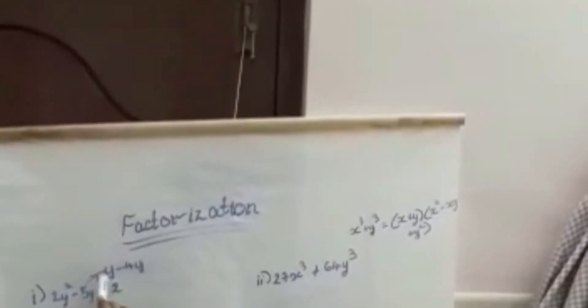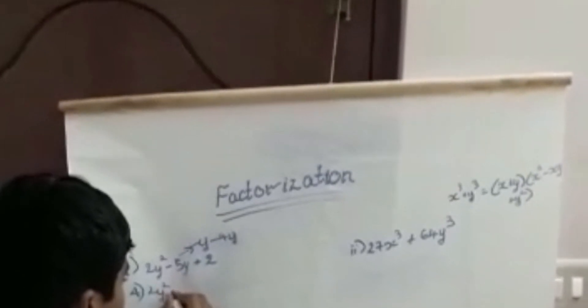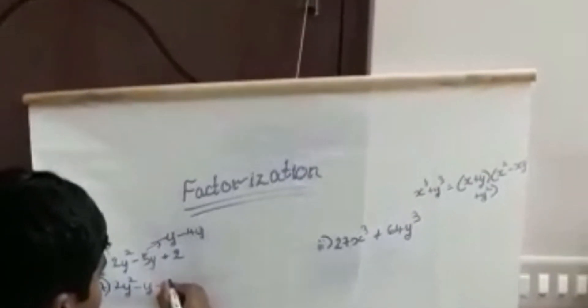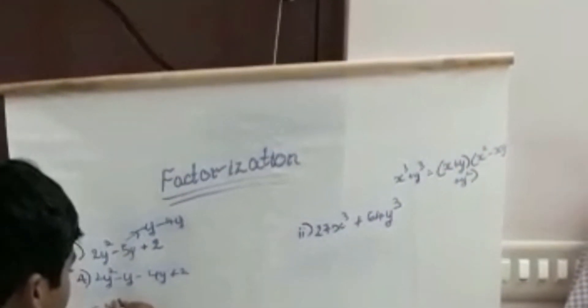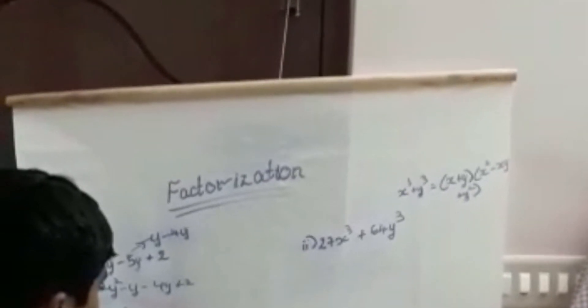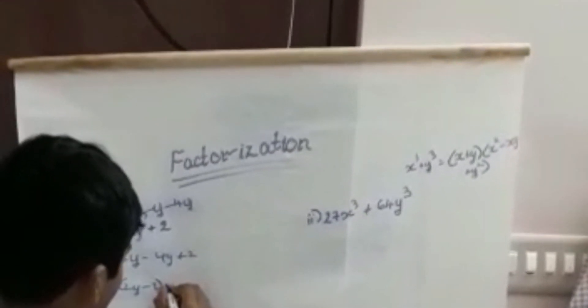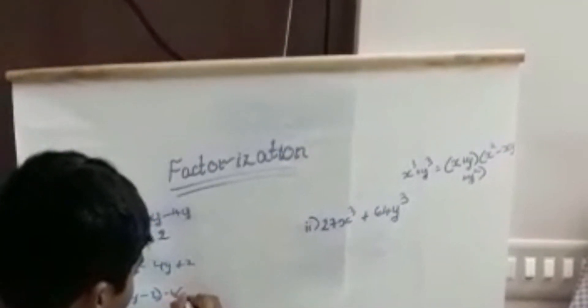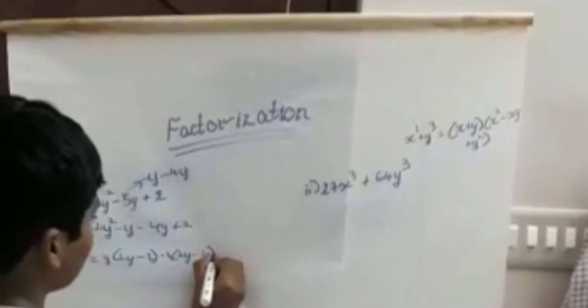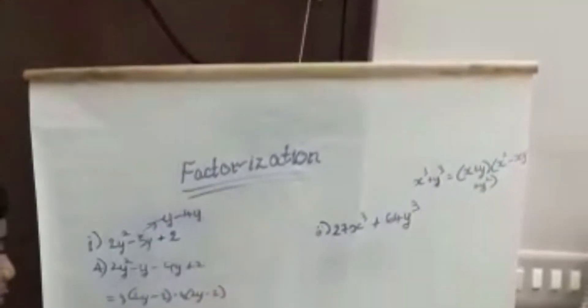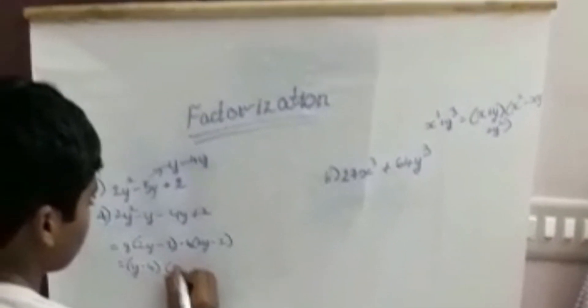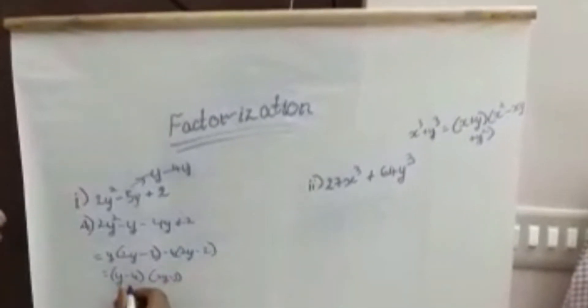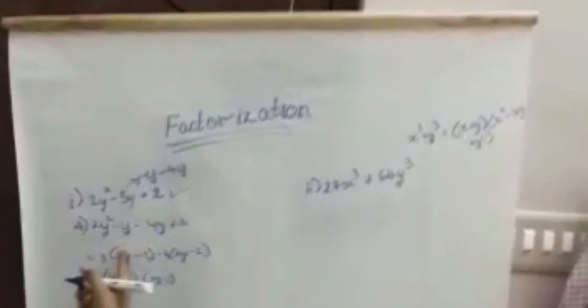Here I write -5 as -y, -4y. Here I get -2y² - y - 4y + 2. And I get the value y(2y - 1) minus 4(2y - 1). Here minus into plus is minus. The last value is (y - 4)(2y - 1), which is the factorized form of this equation.